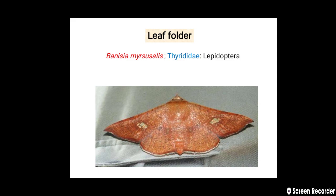The next pest is the leaf folder, that is Vanicia maurucella. It belongs to the family Thyrididae, order Lepidoptera. In the image we can see the adult moth of the leaf folder. So these are the different major as well as minor pests of Sapota or Chiku. Thank you so much.